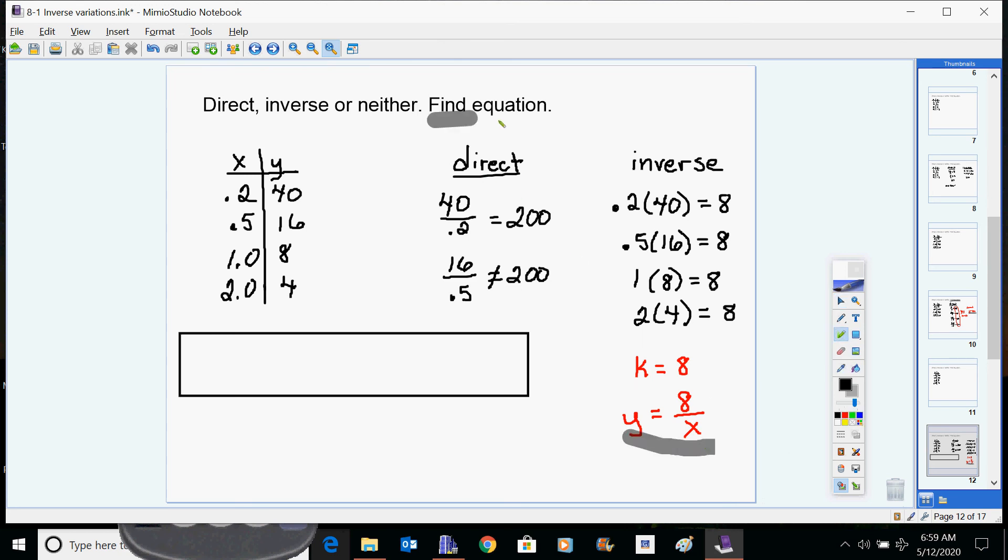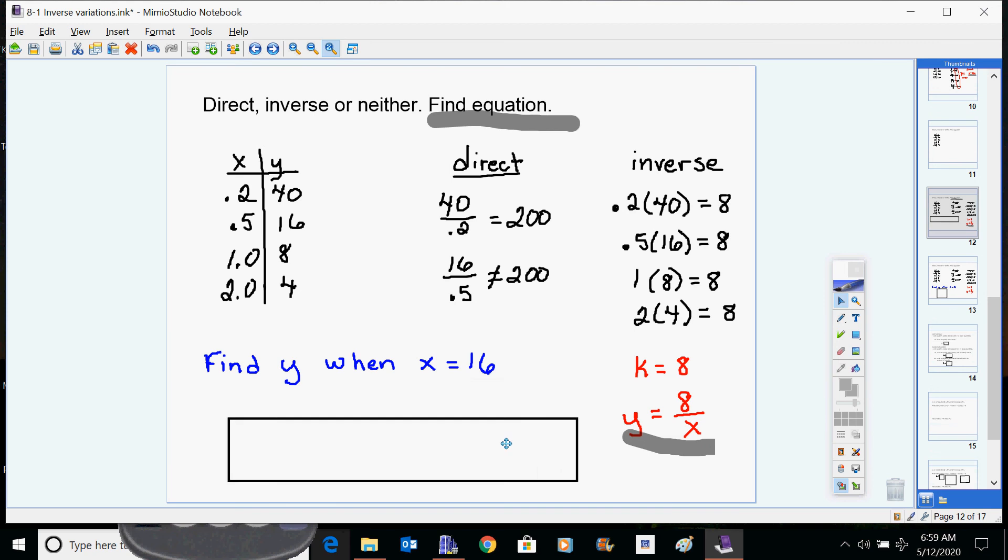Now you might say, wait a minute, what's this other thing that you've got hiding over here? After you find the equation, then it's useful to use the equation. You've done things like this with proportionality before. Once you've found the equation, you need to be able to take the x or the y and plug it in and find out what goes with it. So if I want to find y when x equals 16, I simply take the equation that we got and plug it in and get an answer. So the answer to this question is y equals 0.5.